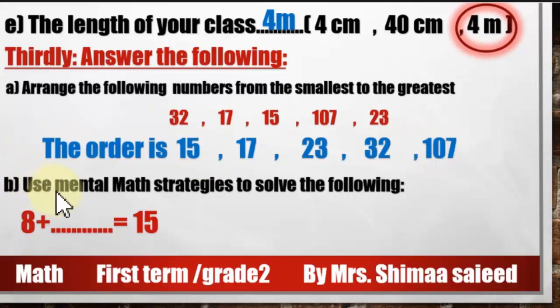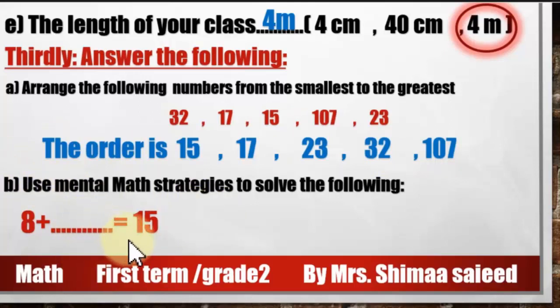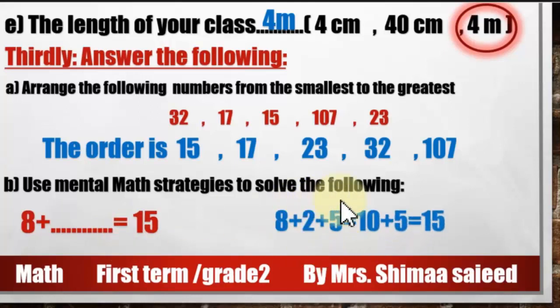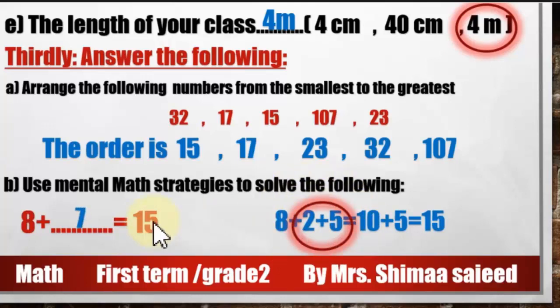Use mental math strategies to solve: 8 plus unknown equals 15. We can use the making-10 strategy: 8 plus 2 equals 10, 10 plus 5 equals 15, so 8 plus 2 plus 5 equals 15. Since 2 plus 5 equals 7, then 8 plus 7 equals 15.